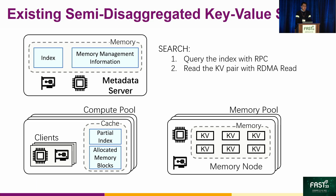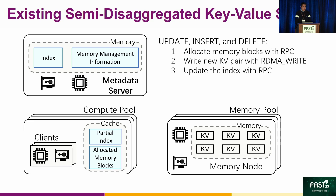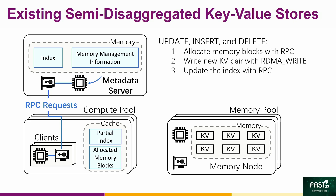However, building KV stores on DM is difficult because the compute power on the memory nodes is too weak to conduct data and metadata management. So existing approaches proposed a semi-disaggregated design to address this issue. They store KV pairs on the memory node but retain the metadata management on monolithic servers. To execute search operations, clients first use RPC requests to find the address of the KV pair, and then use a one-sided RDMA read to fetch the data from the memory node. To execute update, insert, and delete operations, clients first use RPCs to allocate the memory block from the metadata server, then use a one-sided RDMA write to write the data to the memory node, and finally use RPC to update the index stored on the metadata server.